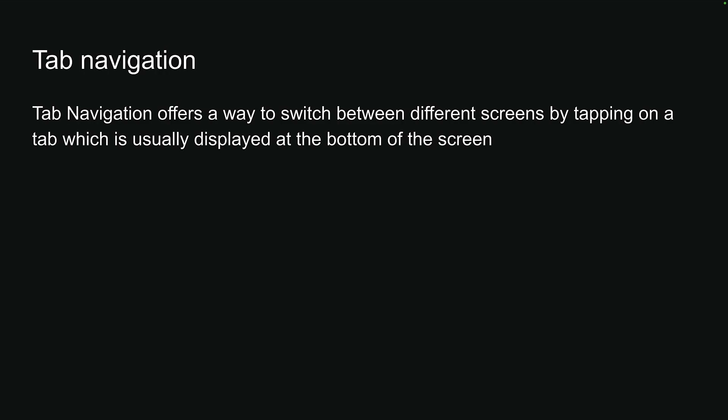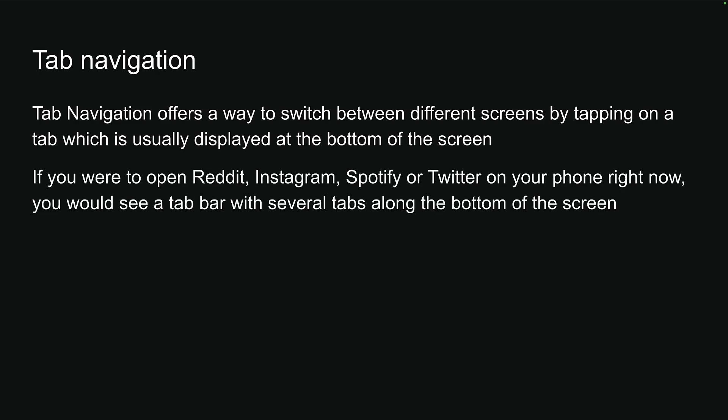For our second navigation pattern, we'll look at tab navigation in Expo Router. Tab navigation offers a way to switch between different screens by tapping on a tab, which is usually displayed at the bottom of the screen. Like stack navigation, tab navigation is also a popular and intuitive pattern found in many apps. If you were to open Reddit, Instagram, Spotify, or Twitter on your phone right now, you would see a tab bar with several tabs along the bottom of the screen — a perfect example of tab navigation in action.